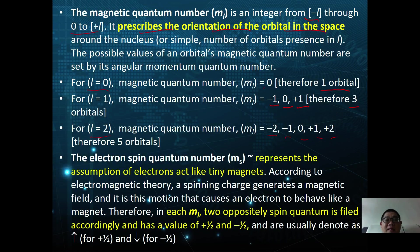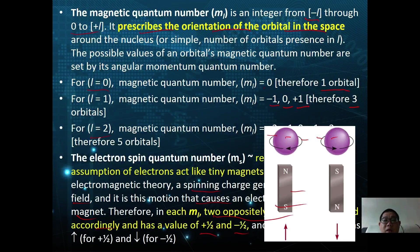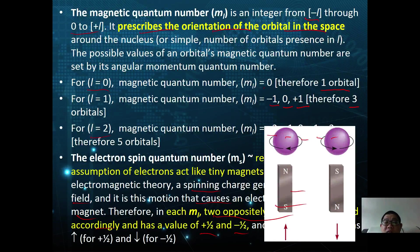Finally, based on the magnetic quantum number, there is what we call the electron spin quantum number, which represents the assumption that an electron acts like a tiny magnet. According to electromagnetic theory, a spinning charge generates a magnetic field, which causes an electron to behave like a magnet. Two oppositely spinning electrons in a field have values of plus one-half and minus one-half, usually denoted as arrow up for positive spin and arrow down for negative spin.